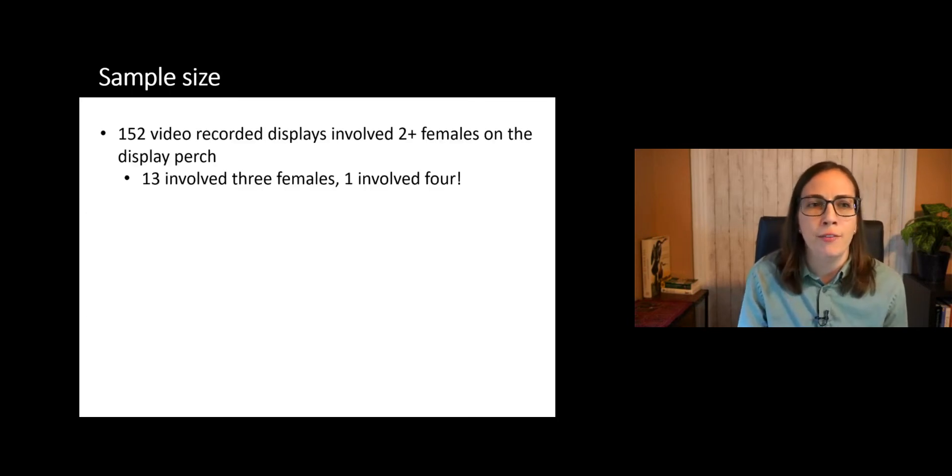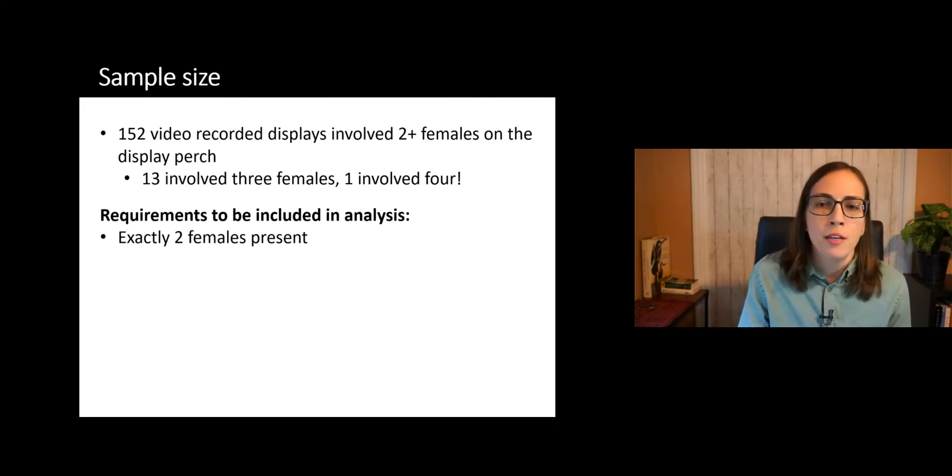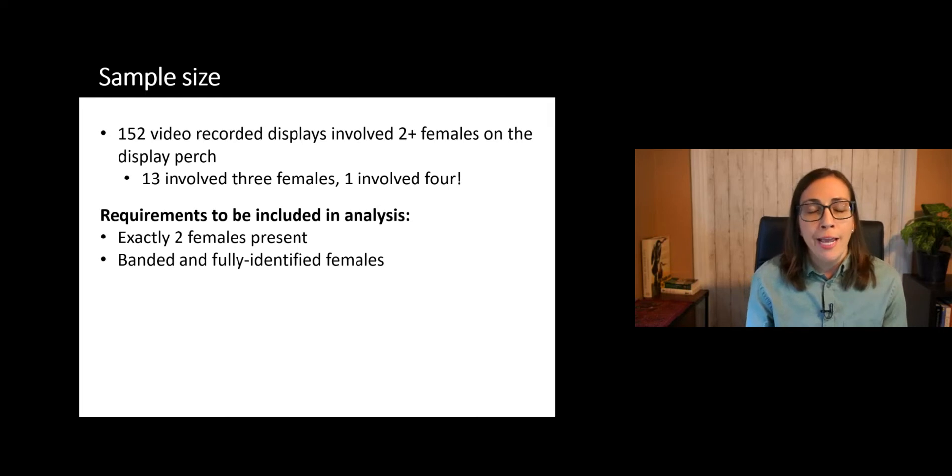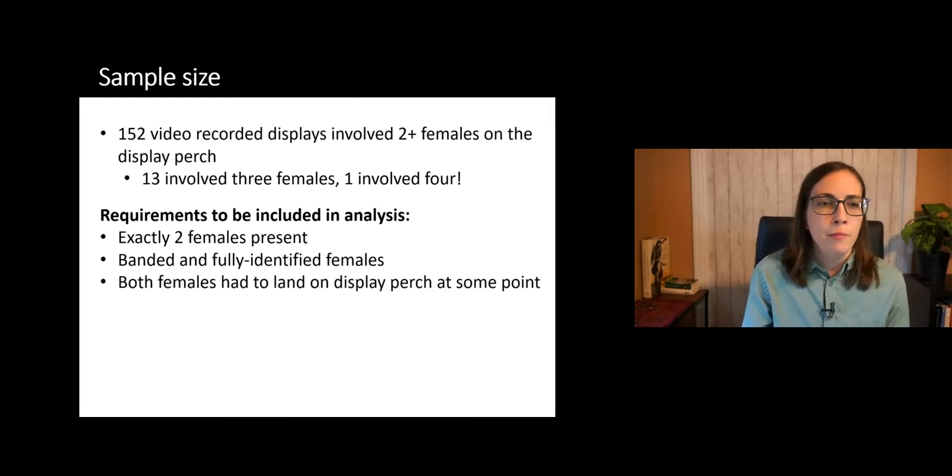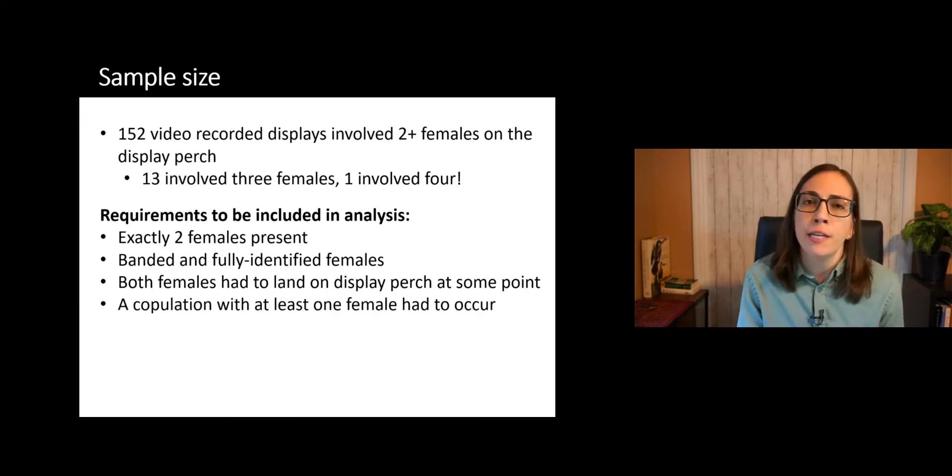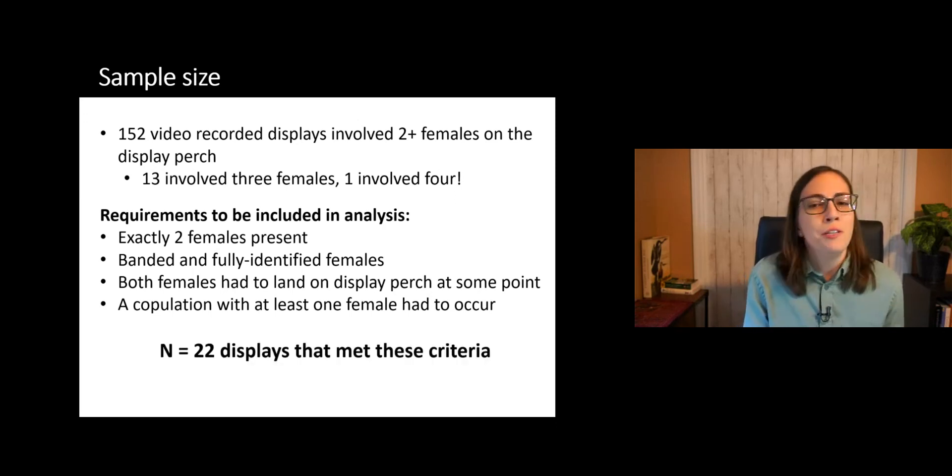For this project, we ended up with a total of 152 video recorded displays involving at least two females on the display perch. And actually, 13 of these involved three females, and one absolutely amazing display involved four females simultaneously. So we did have some set requirements for displays to be included in this analysis. There had to be exactly two females present. We restricted it to banded and fully identified females so that we would know the ages of the females visiting. Both females had to land on the display perch at some point. And a copulation with at least one female had to occur, because we needed the male to make a very clear choice between the two females. So as a result, this dramatically reduced our sample size down to 22 displays that met these criteria. But for meeting this stringent of criteria, and for how uncommon multi-female displays are, this is actually a pretty good number.